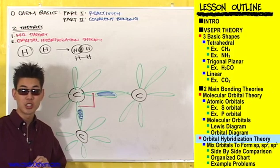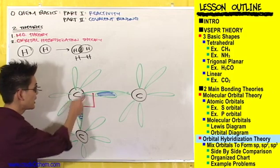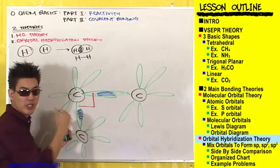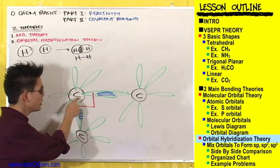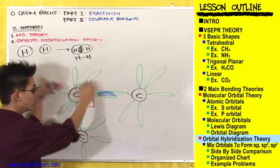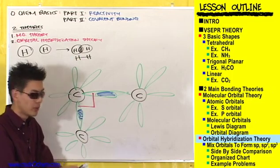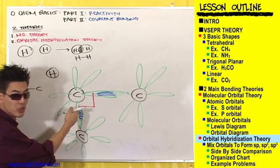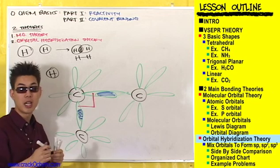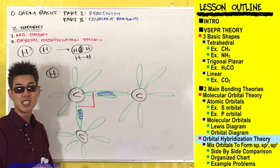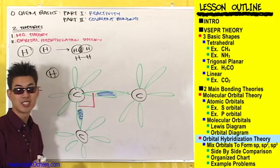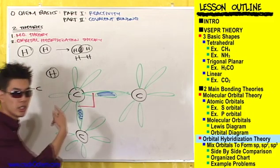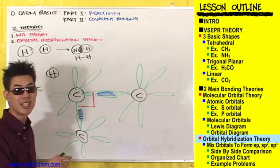The second funny thing going on here is: look at this s orbital. This s orbital looks like it's trapped on the inside behind all these p orbitals. How is this carbon supposed to use its s orbital to bond with anything when all these p orbitals are protruding away from it? How can another hydrogen come in and try to bond with this when all these p orbitals are blocking its path? So this is the second problem, and we're going to explore this. Let's erase this and talk more about orbital hybridization theory.